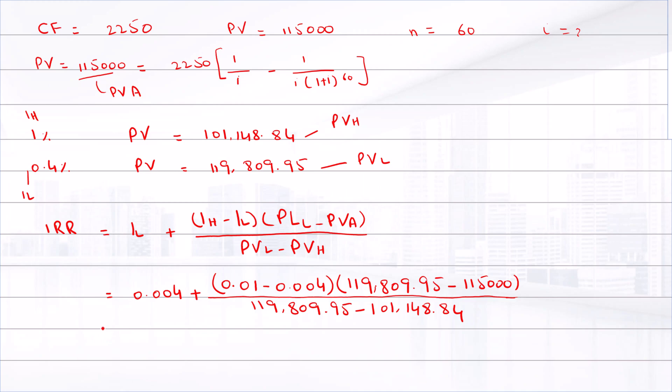And the answer is 0.005415, so the interest rate is 0.5415%. And to find the APR: 12 times 0.005415, that equals 6.5%.